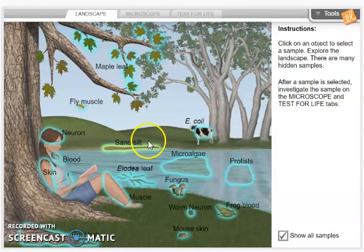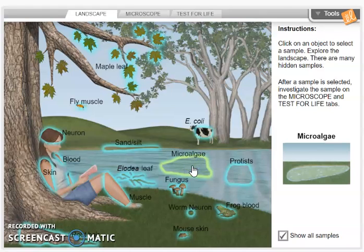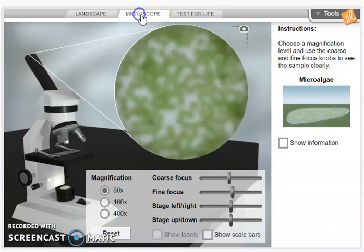In this example, I'm going to pick microalgae. If I left click on that, it will show you what you're going to try to zoom in on area wise. And then if you come back up top here to the microscope tab and click on that, here we are ready to zoom in on these cells.